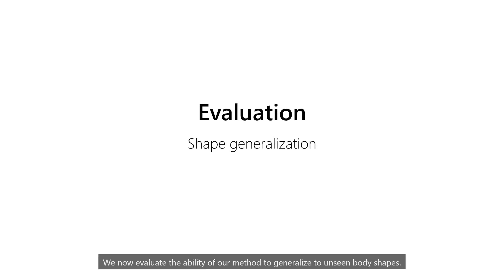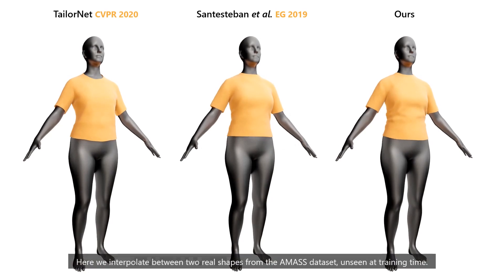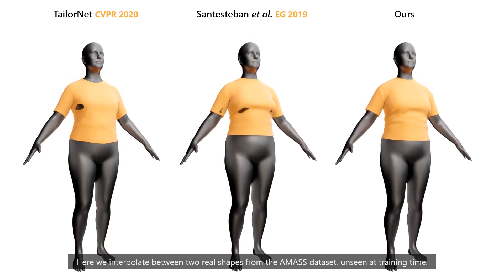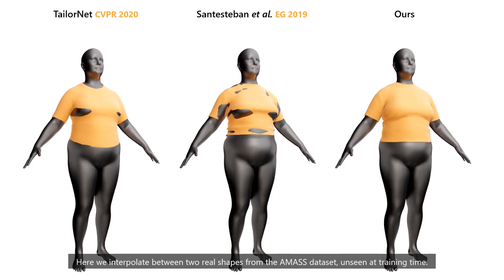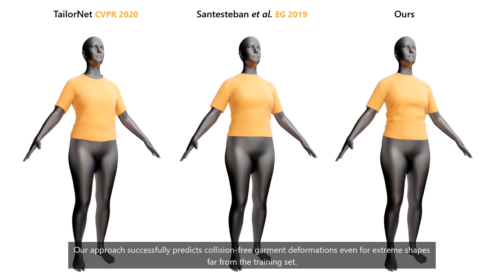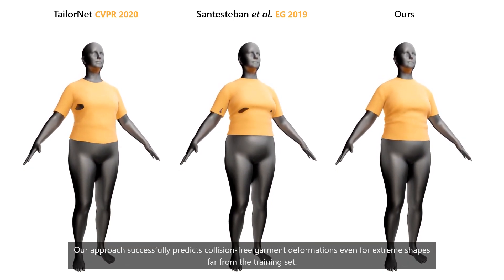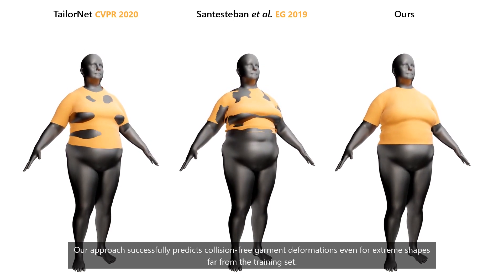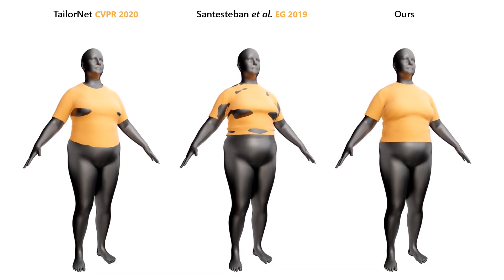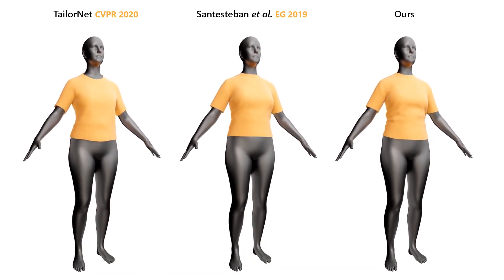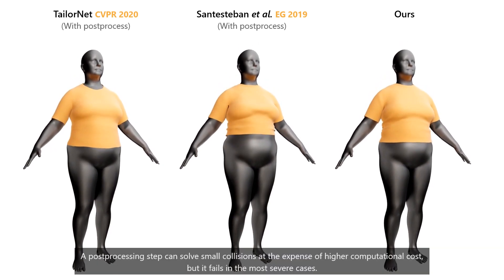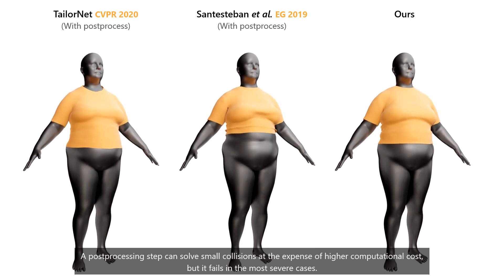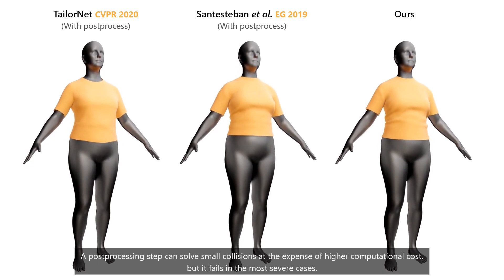We now evaluate the ability of our method to generalize to unseen body shapes. Here we interpolate between two real shapes from the AMAS dataset, unseen at training time. Our approach successfully predicts collision-free garment deformations even for extreme shapes far from the training set. A post-processing step can solve small collisions at the expense of higher computational costs, but it fails in the most severe cases.